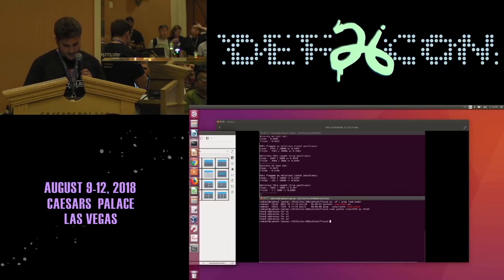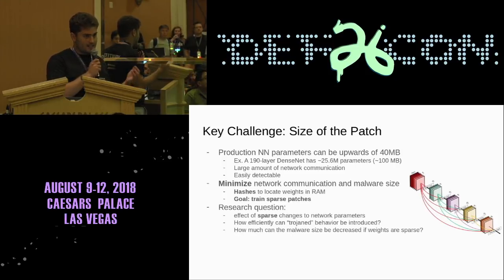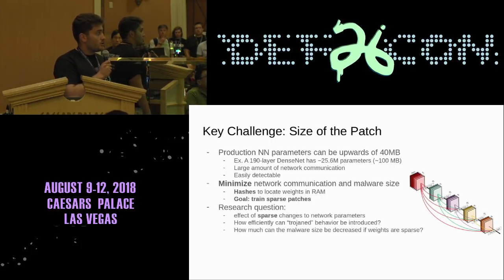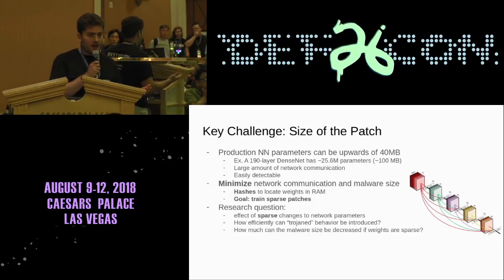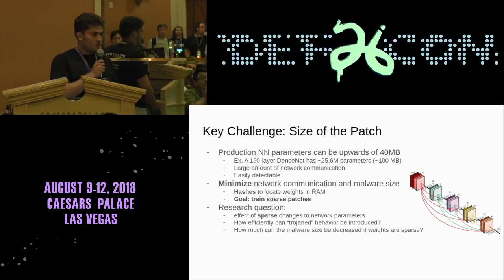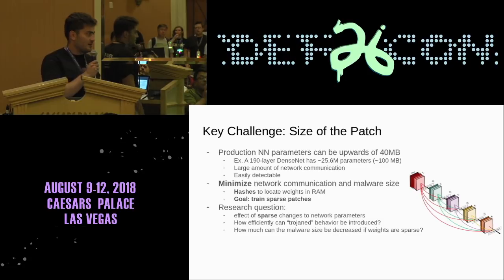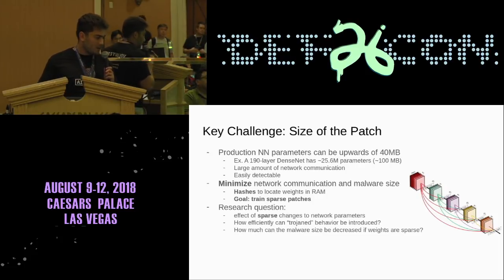Now we're going to talk about some of the constraints you face when trying to perform this attack. For this attack to be realistic, you can't have the malware be massive — any weird binary throwing around massive amounts of data is likely to pull up red flags. Neural networks are problematic in that way because they can be upwards of 40 to 100 megabytes. The key is making the size of the patch to introduce the Trojan behavior very small. One approach is not to actually store the weights you're looking for, but just the hashes of them and find those in RAM. But the real goal is to train a very sparse patch — change as few parameters as possible. The interesting research question is: if you change very little in the network, how effectively can you introduce new behavior, and how much will making the sparse patch reduce the size of the malware?